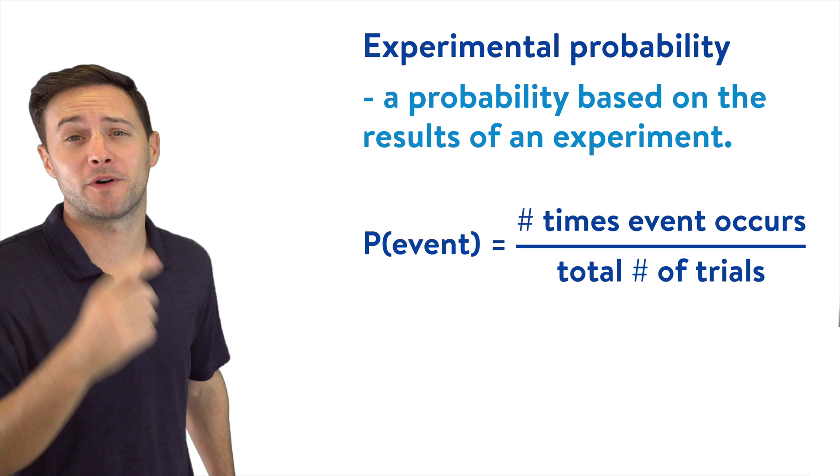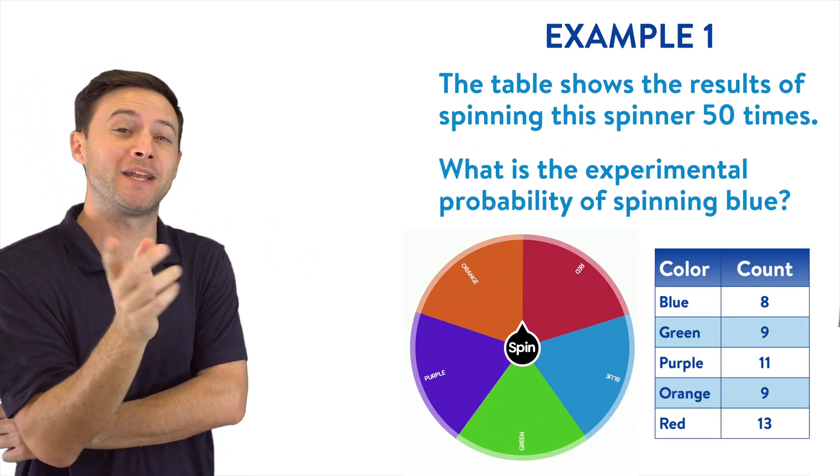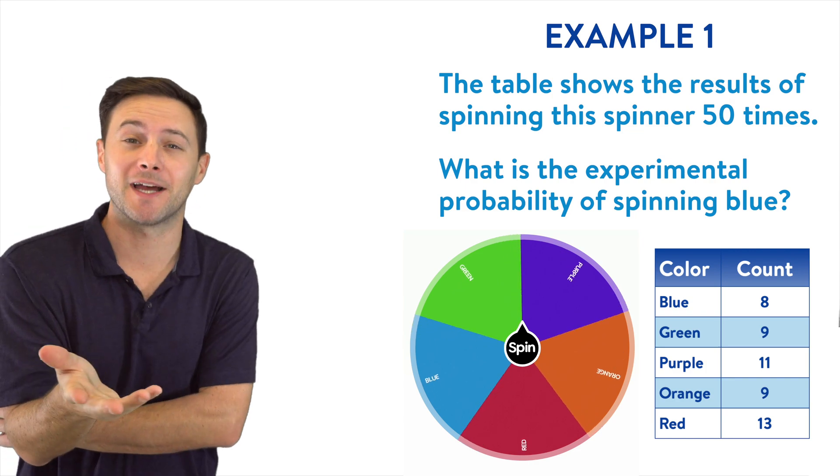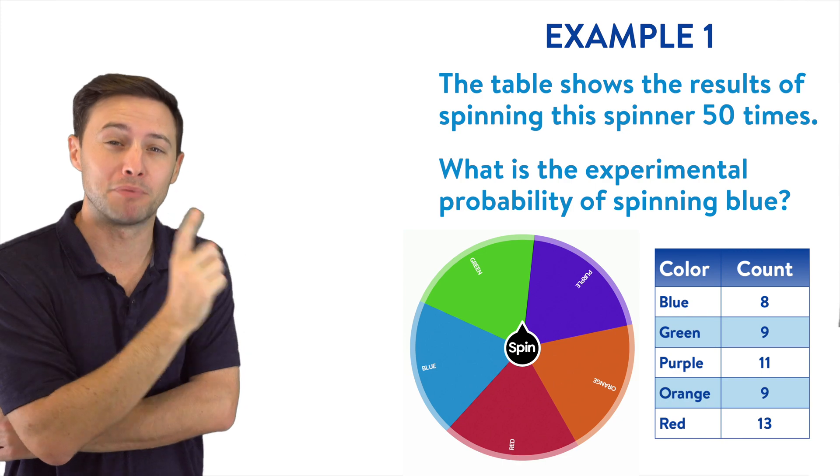Now that we understand that, let's get to our first example. Example one, the table shows the results of spinning this spinner 50 times. What is the experimental probability of spinning a blue?